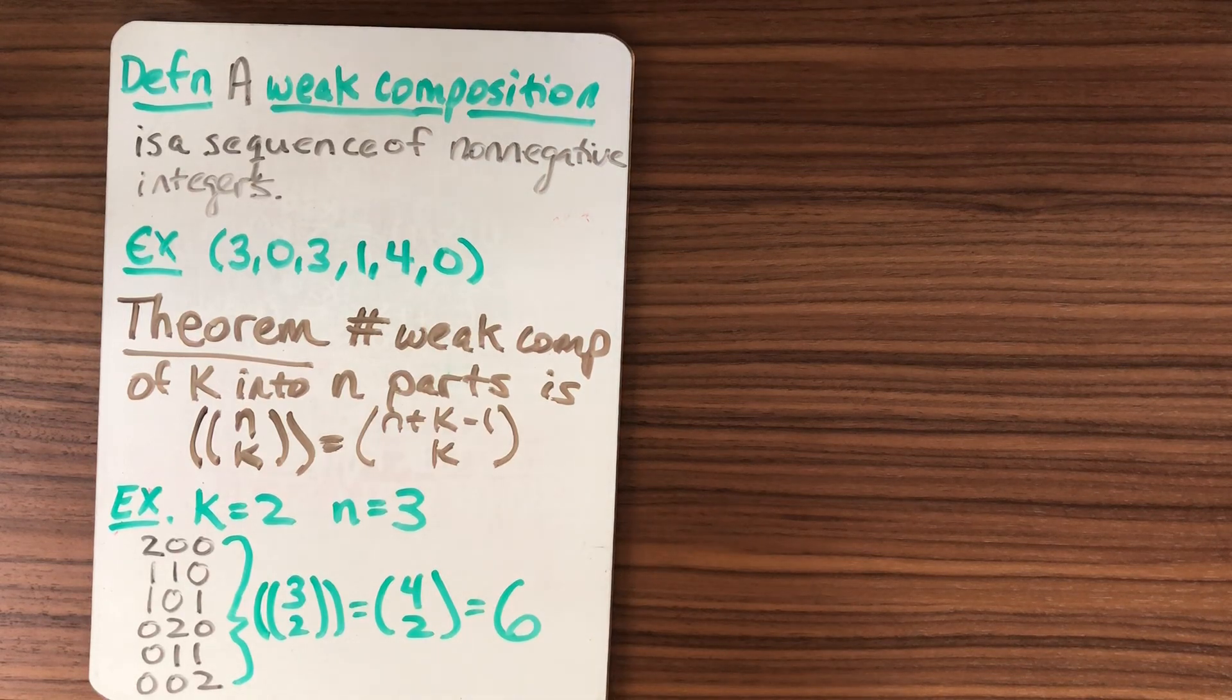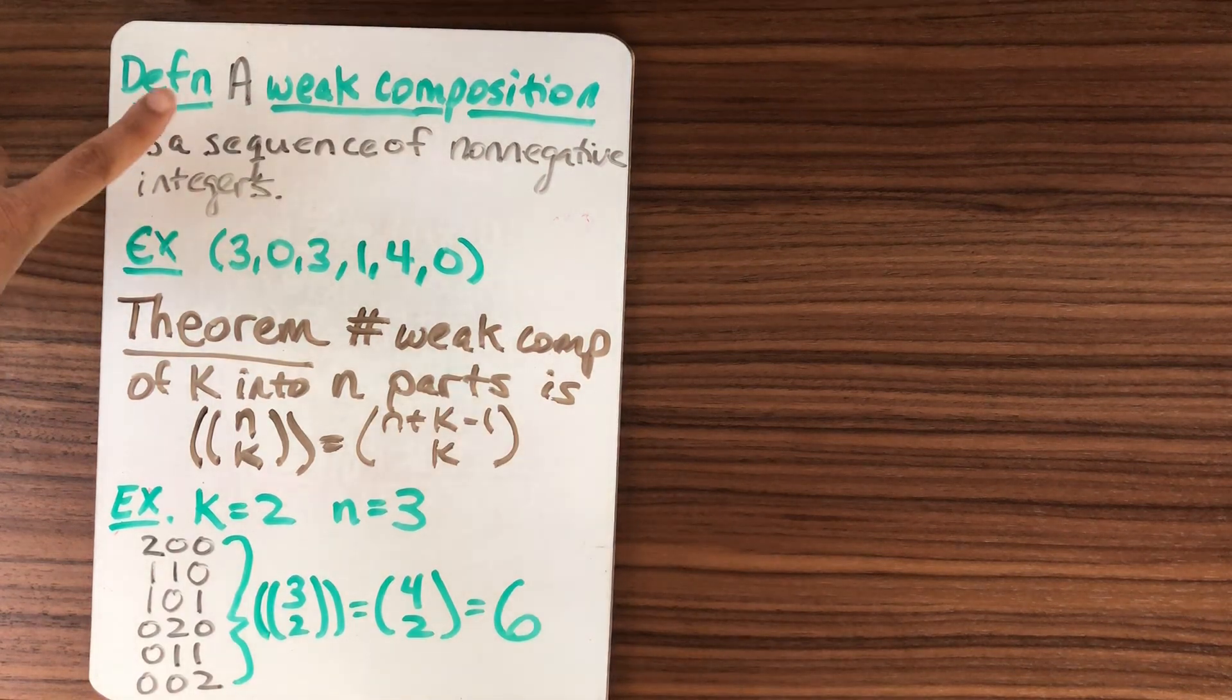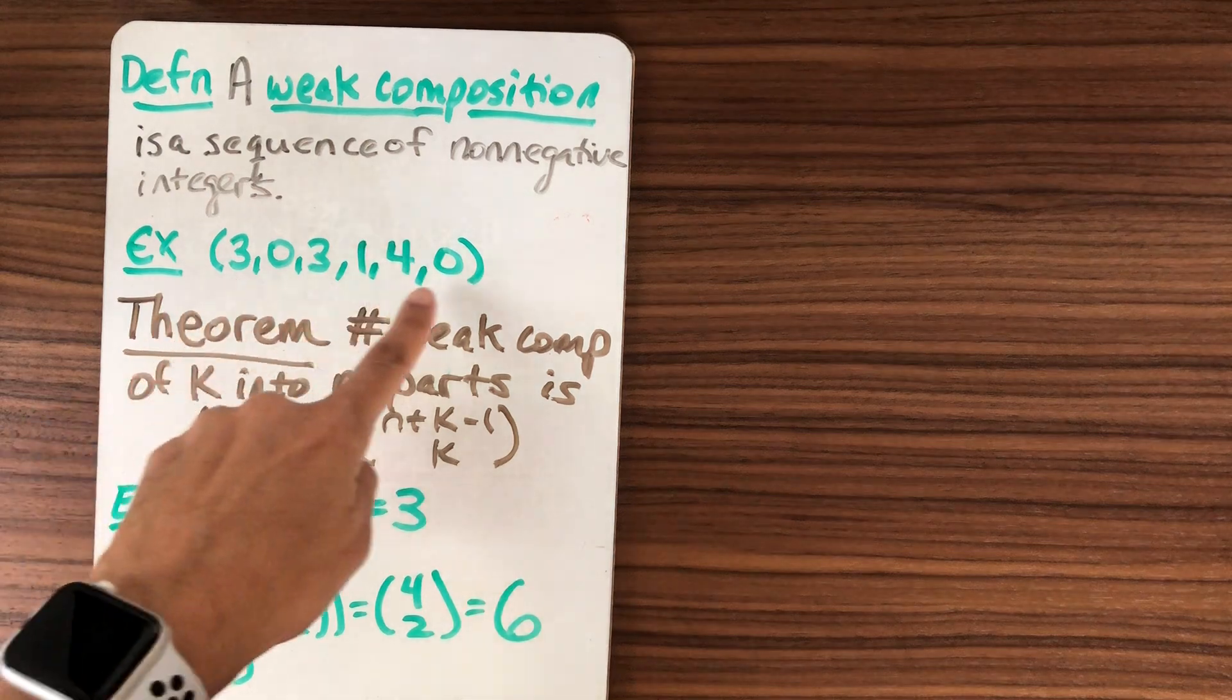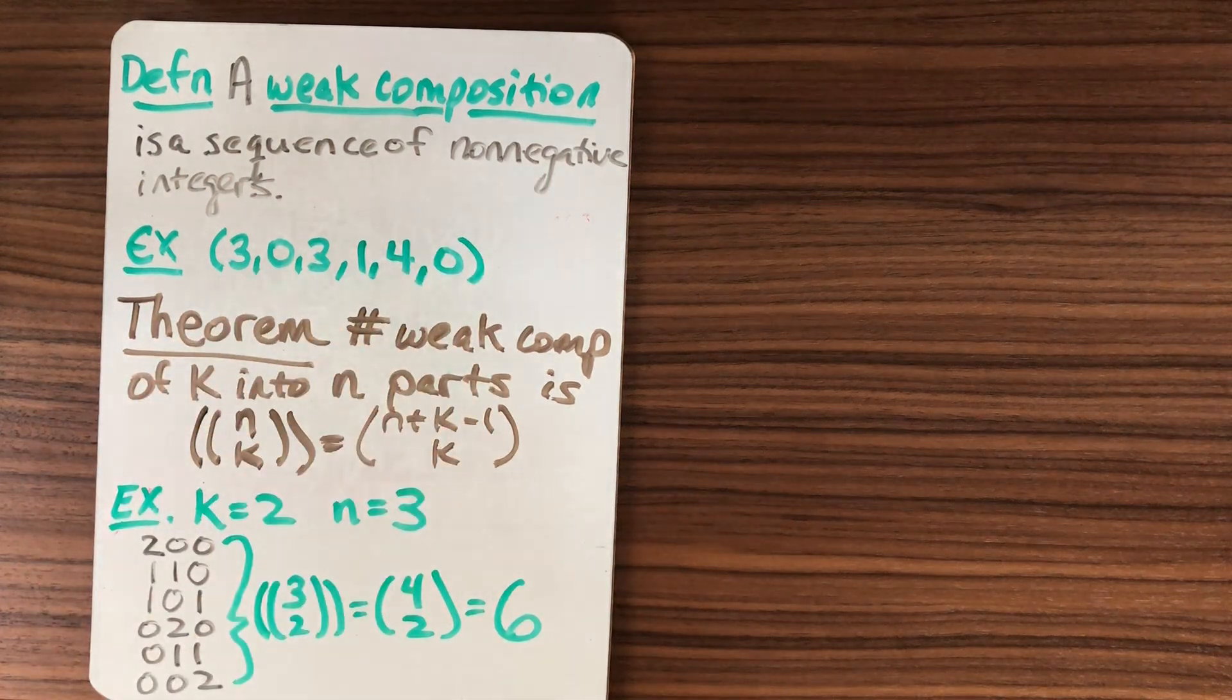Here's a recap of what we talked about in the last video. We looked at weak compositions. They are sequences of non-negative integers. Here's an example.